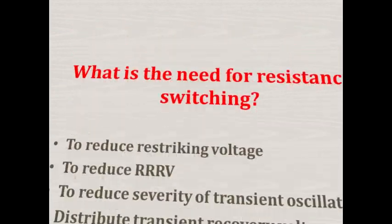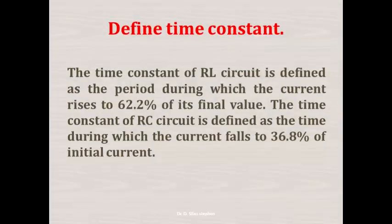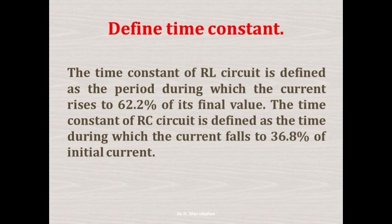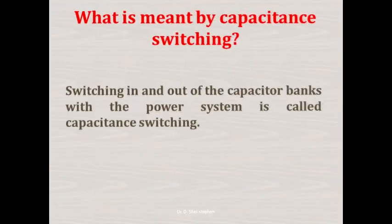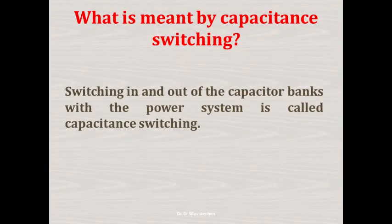Define time constant. The time constant of an R-L circuit is defined as the period during which the current rises to 62.2% of its final value. The time constant of an R-C circuit is defined as the time during which the current falls to 36.8% of the initial current.